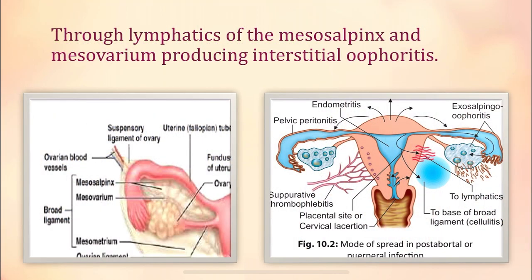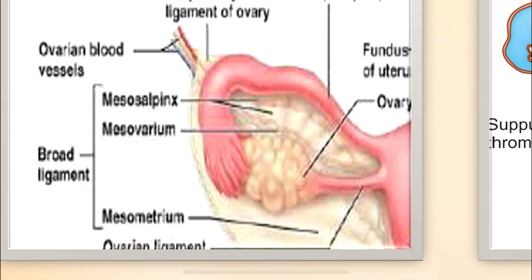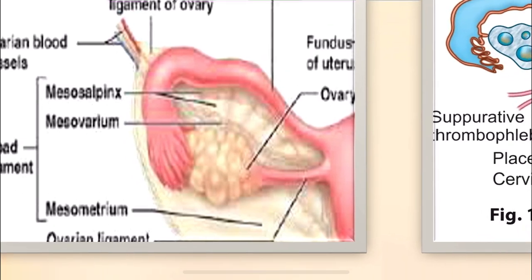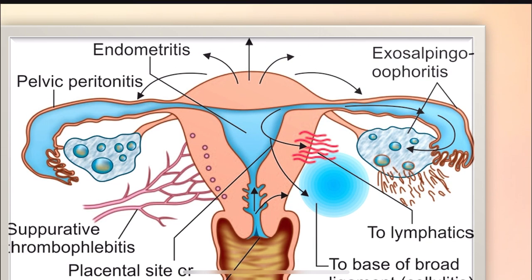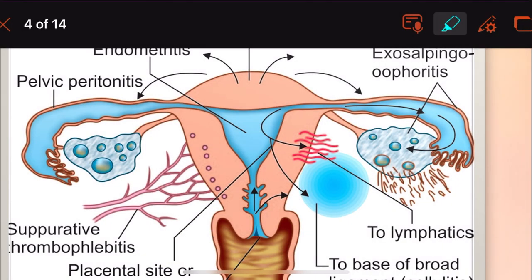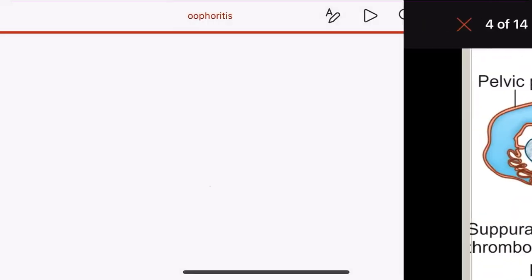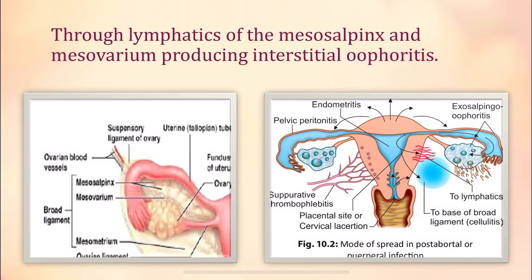The second route is through lymphatics — specifically the lymphatics of the mesosalpinx and mesovarium. Through these lymphatics, the infection spreads and affects the ovaries, producing interstitial oophoritis.